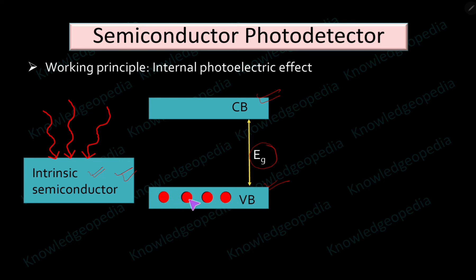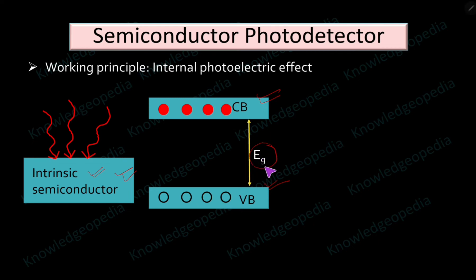If electrons receive photons of energy greater than the energy gap, they move to the conduction band, leaving behind an empty space called a hole. So there is a hole in the valence band and the electron has moved to the conduction band. Similarly, a second electron receiving energy greater than EG will also move to the conduction band leaving a hole, and a third electron likewise. This process continues as long as electrons receive energies greater than EG.